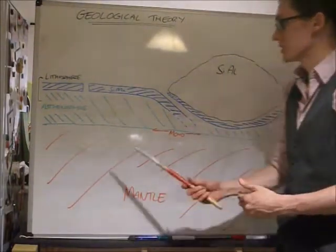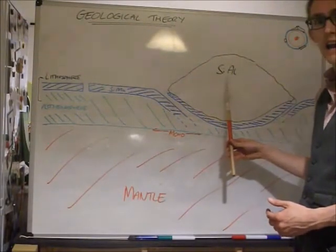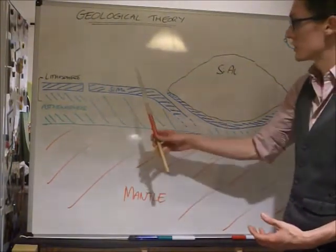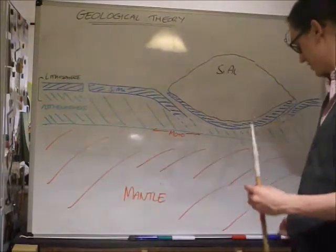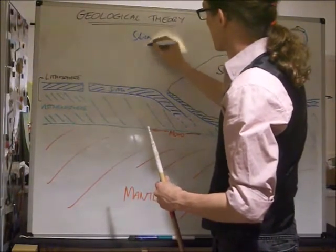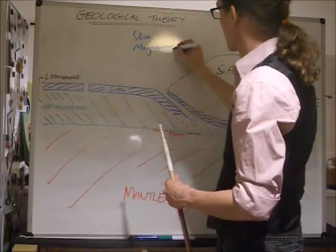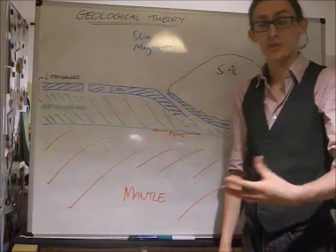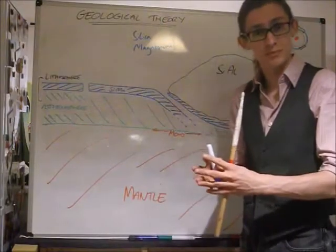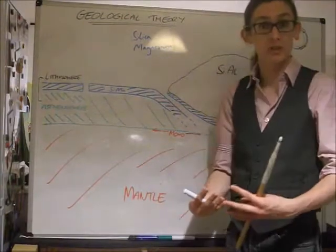Now you will notice, as well, that I have labelled these Saima and Saial. This follows on from our lesson that we've done on this, that the Saima is a combination of silica and magnesia. These are the main elements that make up the Saima. Now, Saima plates are generally a lot more dense. Thinner, but they are very dense, and they lead to basaltic rocks being formed.